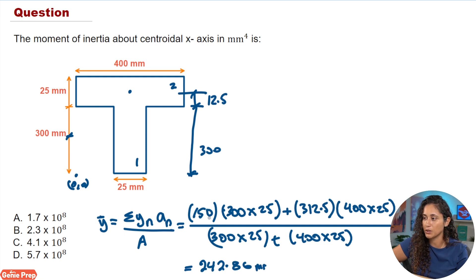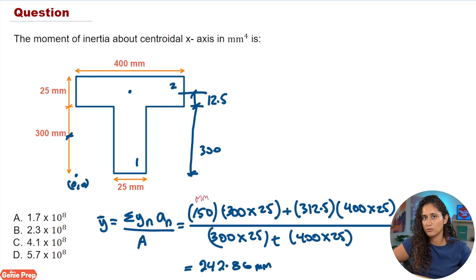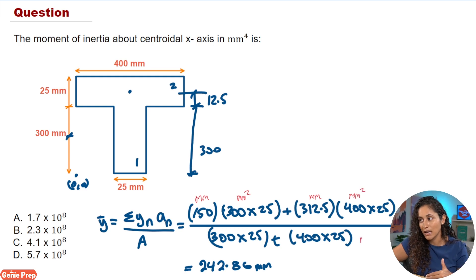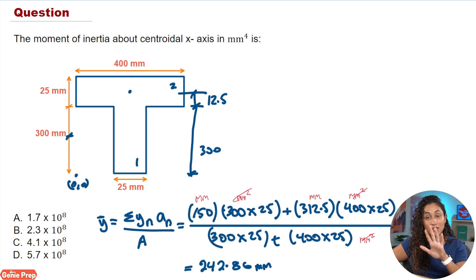Let's quickly check the units. For each term in the numerator, yn is in millimeters and area is in millimeters squared, giving millimeters cubed. In the denominator we have millimeters squared. The millimeters squared cancel, leaving millimeters — which is the correct unit for a centroid. Note that moment of inertia must have units of millimeters to the power of four.